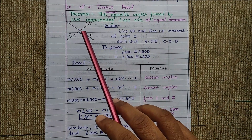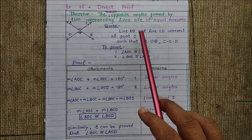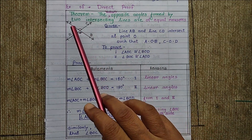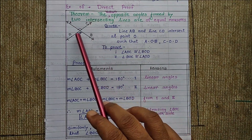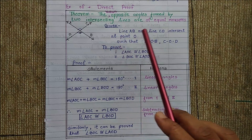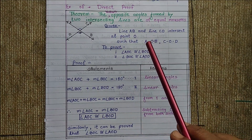Line AB and line CD intersect at point O. This is given.